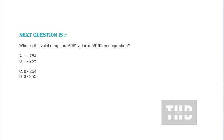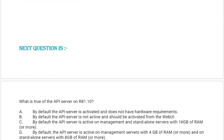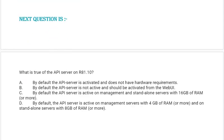Next question: What is the valid range for VR ID value in VRP configuration? Option A: 1 to 254, option B: 1 to 255, option C: 0 to 254, option D: 0 to 255. Correct answer is option B.